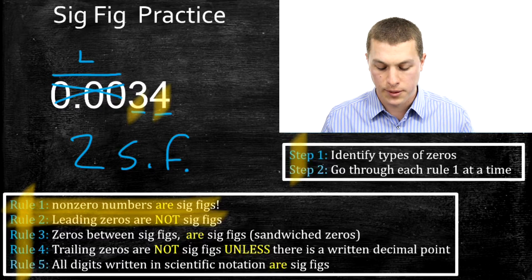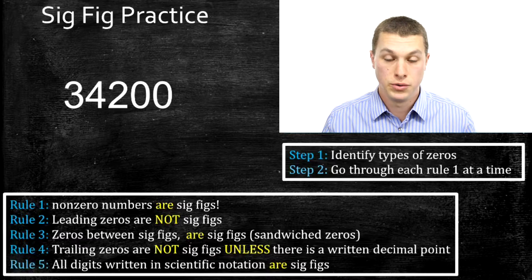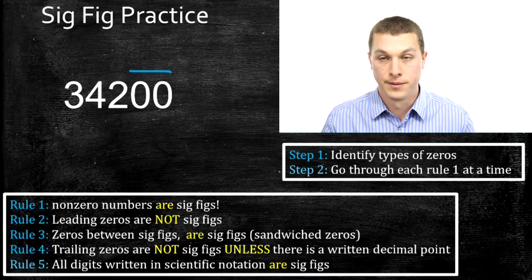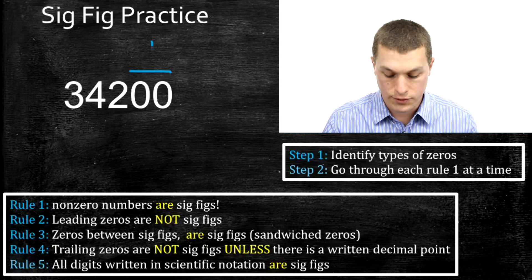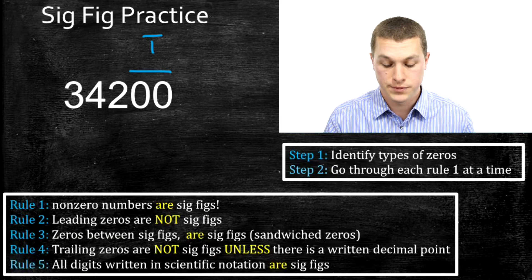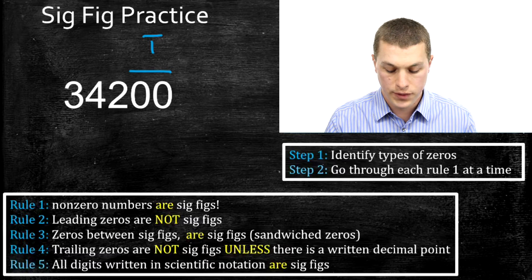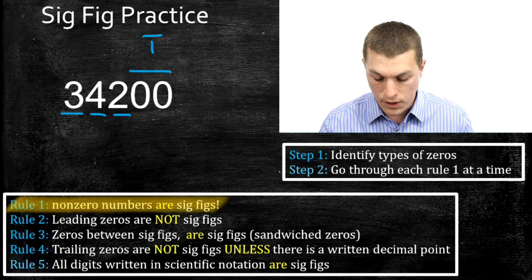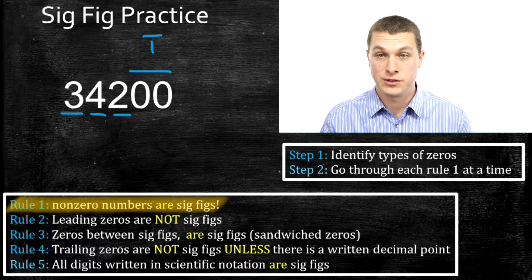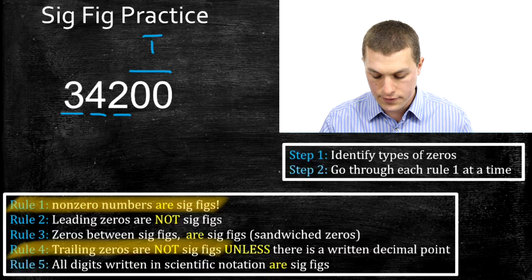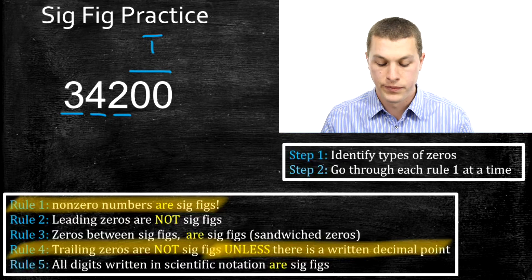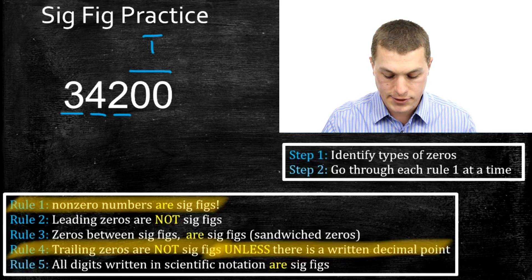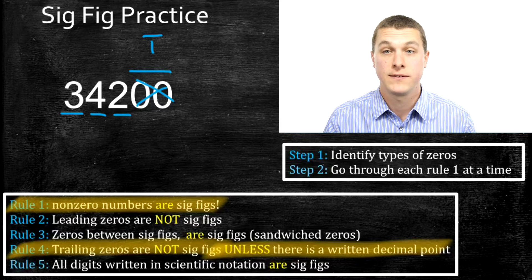The next problem we're going to practice is the number 34,200. Again, we're just going to start by identifying the zeros we have. Here we have these two zeros at the end — those come at the end of our number, so we know they're trailing zeros. We're going to apply our sig fig rules. The first three numbers — three, four, and two — are sig figs because non-zero numbers are always sig figs, which we know from rule one. Trailing zeros are dealt with in rule four, and rule four says trailing zeros are not sig figs unless there is a written decimal point. There's no written decimal point here, so those zeros are not sig figs. So how many sig figs do we have? We have three.